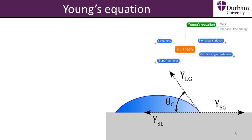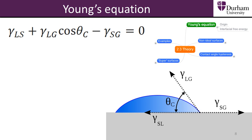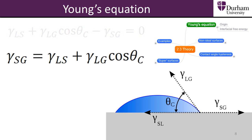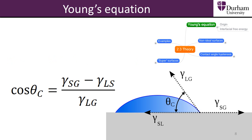Young's equation arises from considering the condition of thermodynamic equilibrium, where the three interfacial tensions, treated as forces, are balanced in the horizontal direction along the line of the solid interface. Rearranging the equation, we can obtain the cosine of the contact angle in terms of the interfacial tensions. The value of the contact angle can be between 0 and 180 degrees, and varies widely depending upon the chemical compositions of the solid, liquid, and gas that form the interfaces.